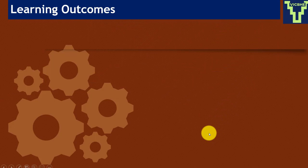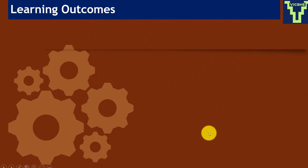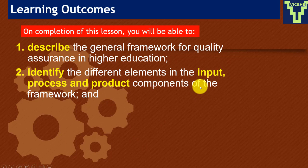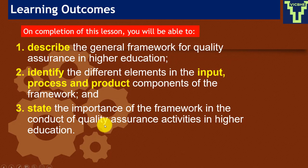Today we are going to: first, describe the general framework for quality assurance in higher education; second, identify the different elements — input elements, process elements, and product elements; and third, state the importance of the framework in the conduct of quality assurance in higher education. We'll also cover the historical background to this framework.